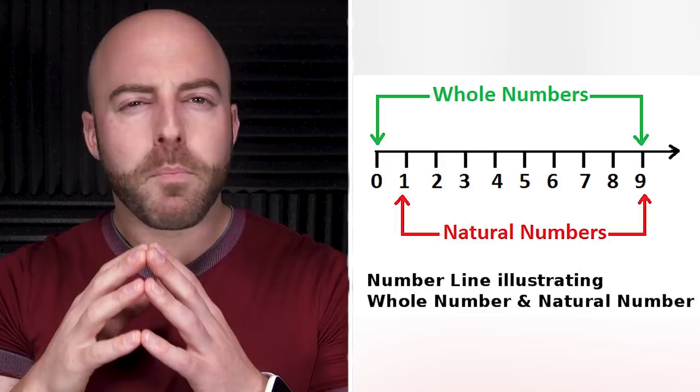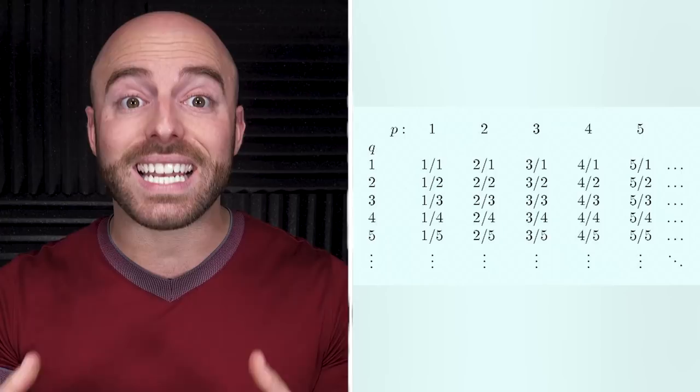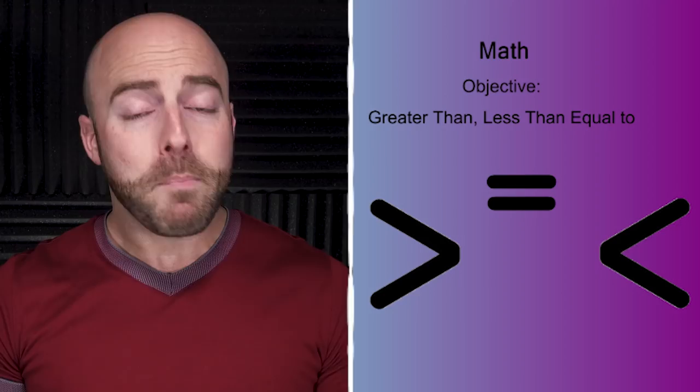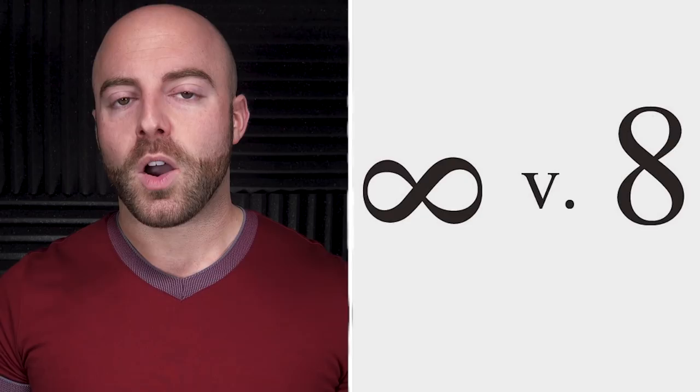Galileo used an infinite series of positive integers and a subset of square numbers. Some numbers are squares but not all of them, so the total of the numbers must be more than the amount of squares. But every square has a positive number that is the square's root, and every number has one square. So you can't have more of one than the other, and the subset can also be infinite. The paradox uses one-to-one correspondence, and Galileo concluded that less, greater, and equal to can only be applied to finite sets and not infinite sets.